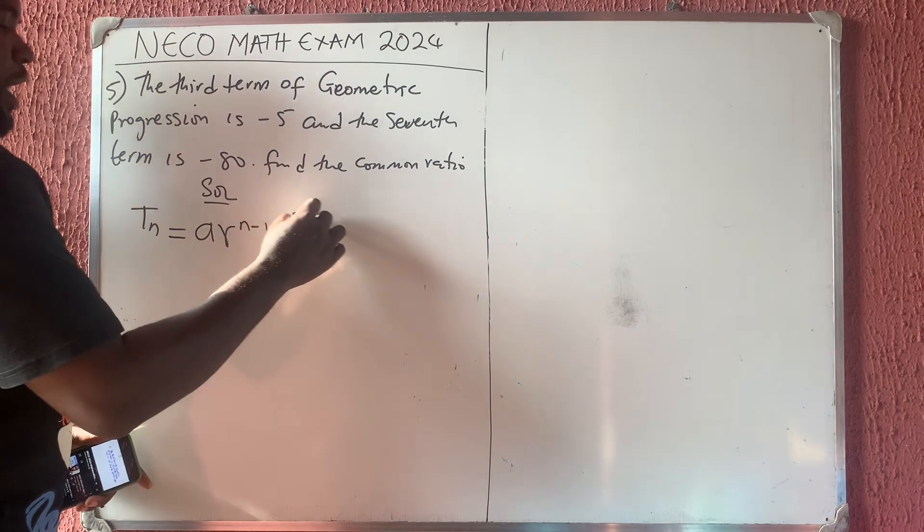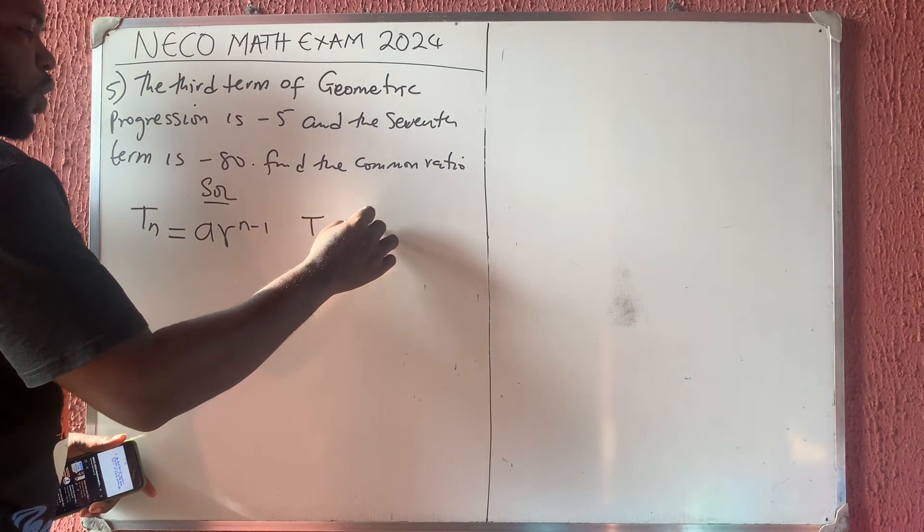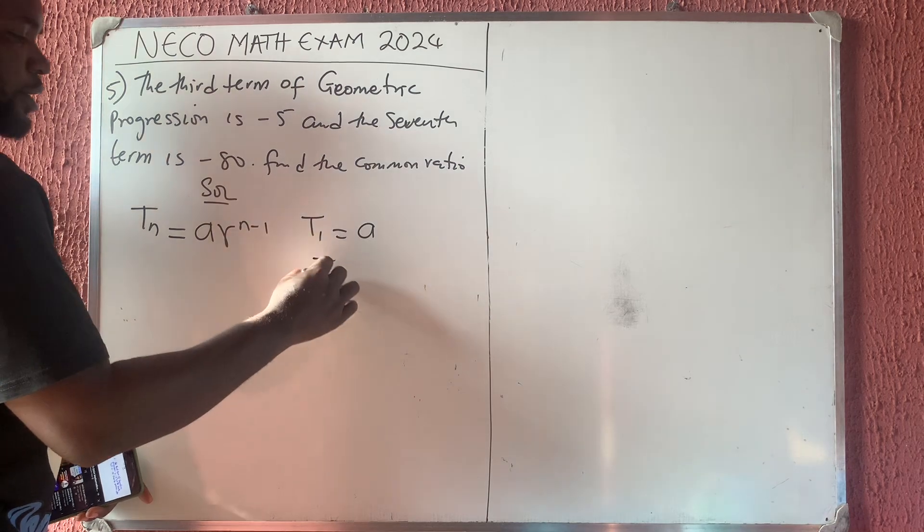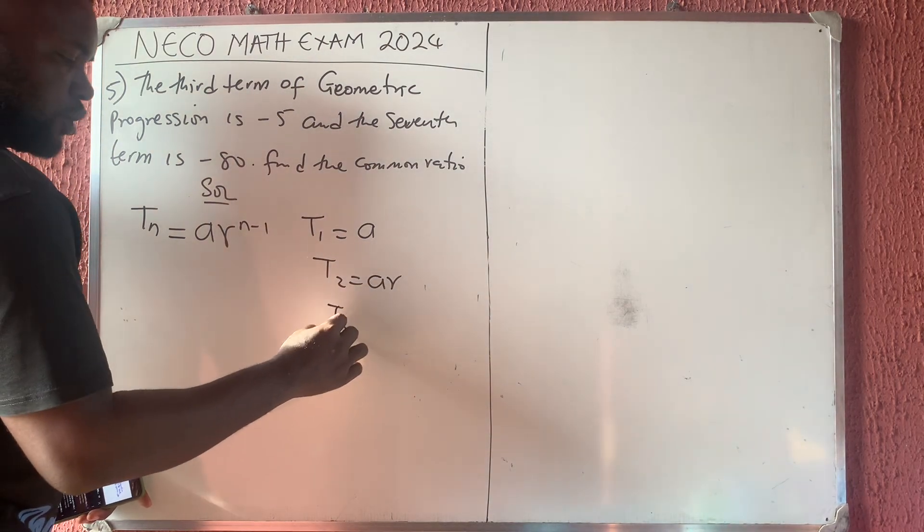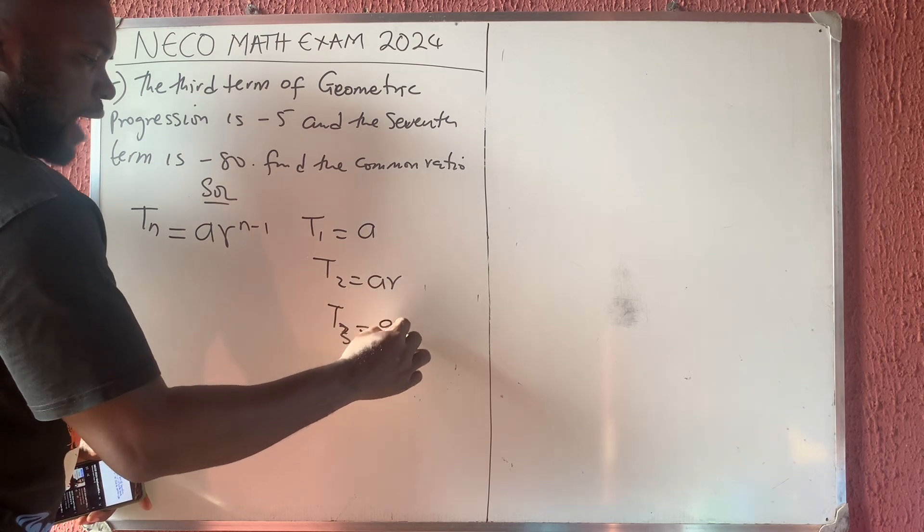So therefore, if you have the first term, the first term should be A, because 1 minus 1 is 0. The second term is going to be A R. The third term is going to be A R squared.